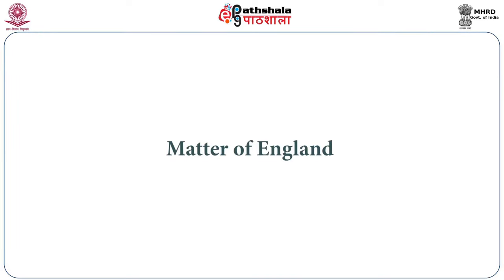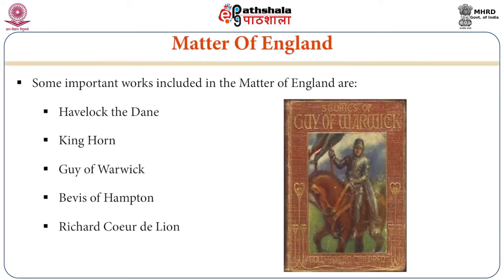Matter of England is also exhibited through the corpus of romances. These include: number one, Havelok the Dane; number two, King Horn; number three, Guy of Warwick; number four, Bevis of Hampton; and number five, Richard Coeur de Lion. All these belong to the Matter of England.